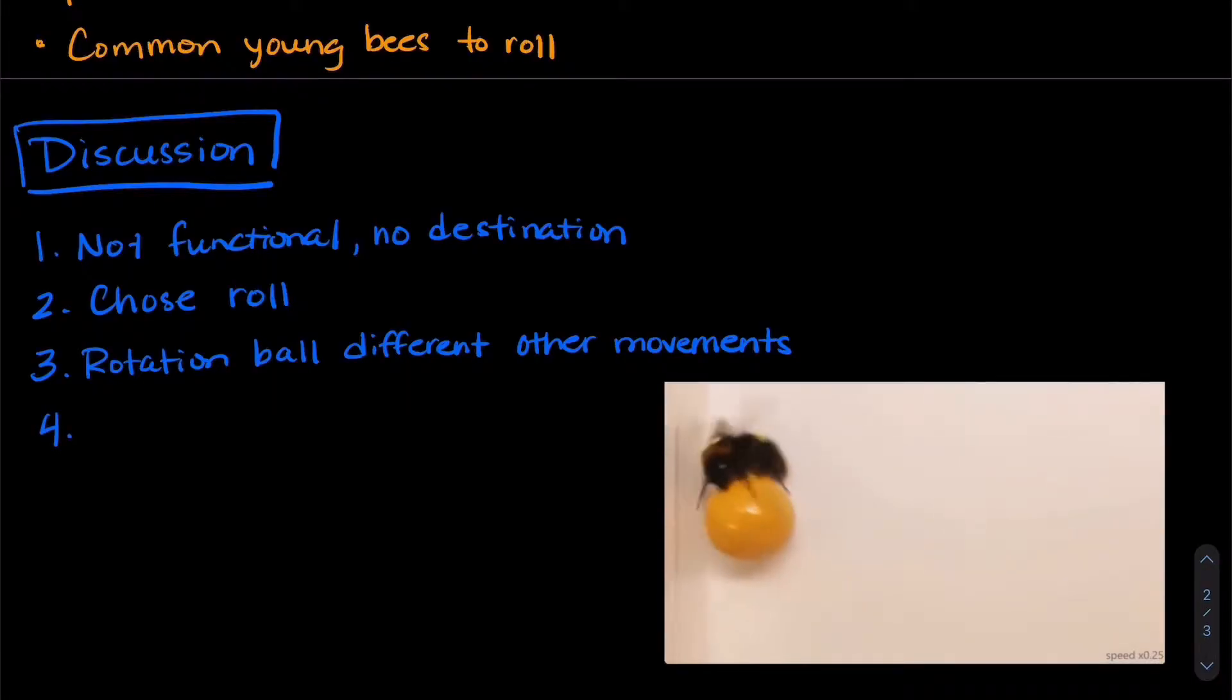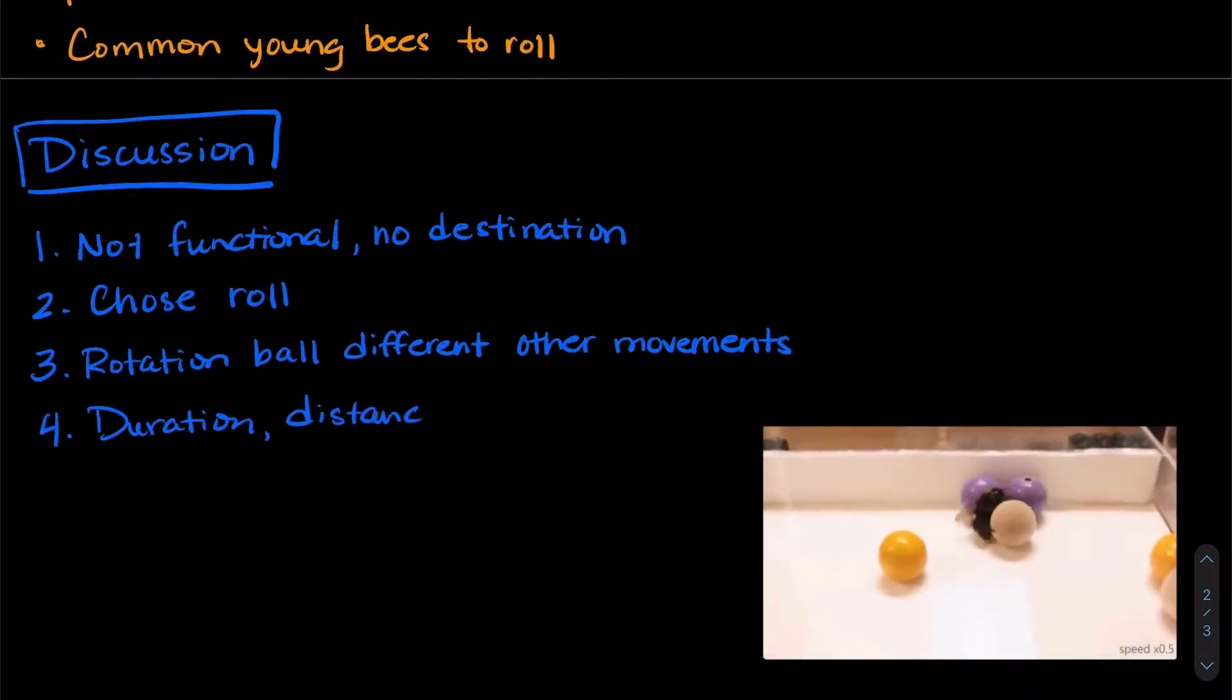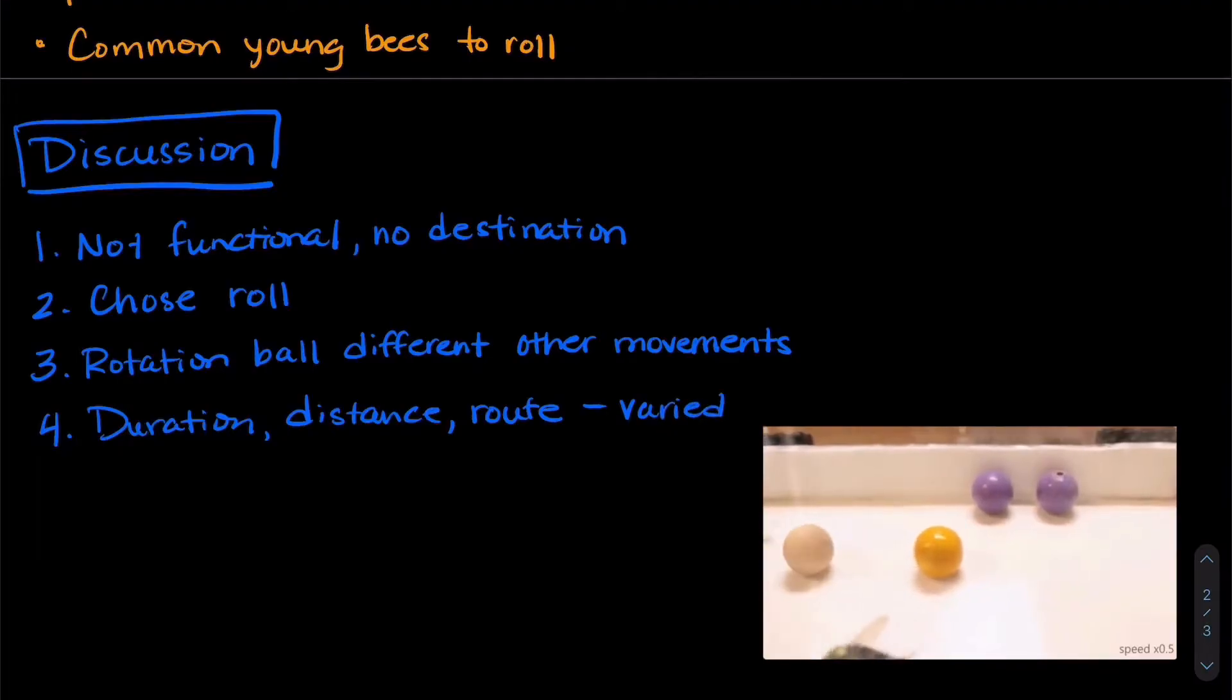Onto the fourth rule of play. The duration, the distance, and the route that the bees took with the balls were varied. There was clearly not a plan. So they have what could be called creativity with rolling the balls.